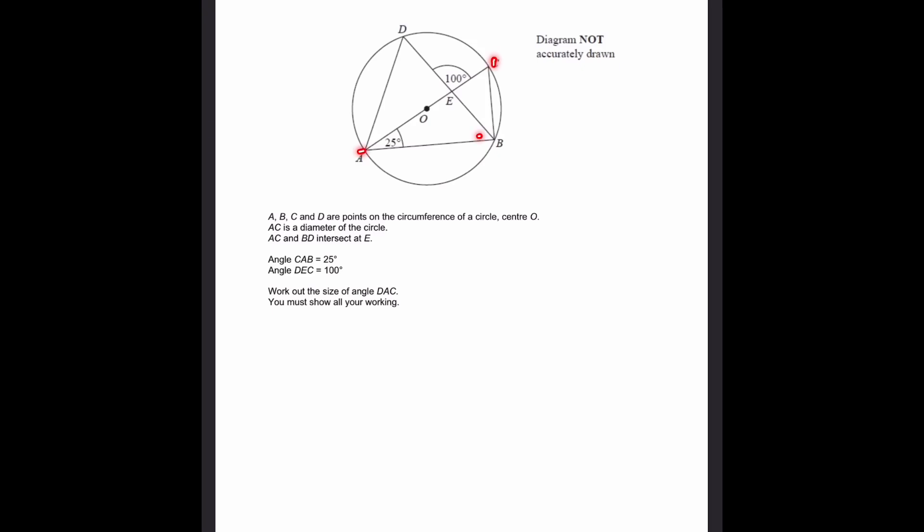A, B, C, and D are four points on the circumference of a circle with center O. AC is the diameter. AC and BD intersect at point E.